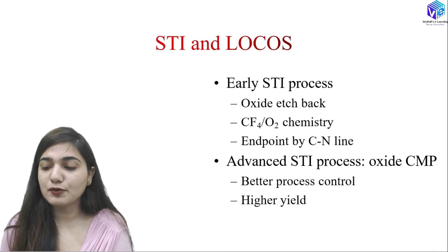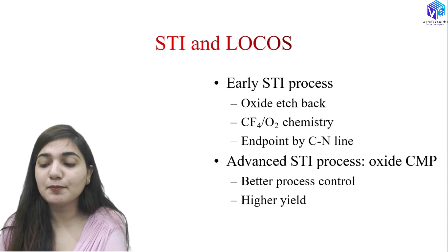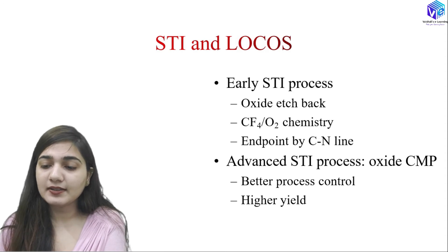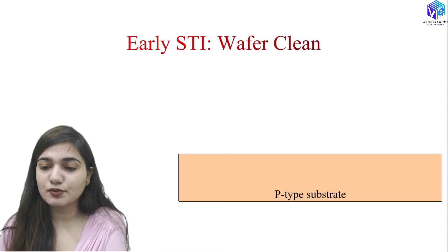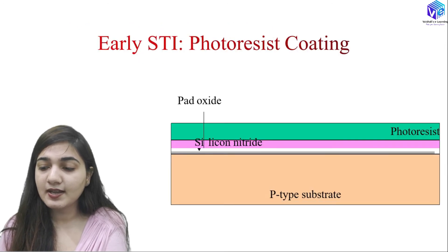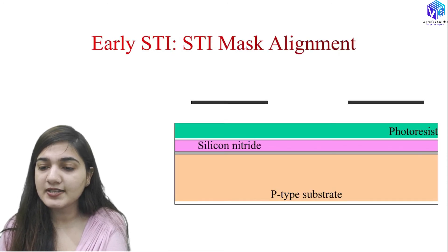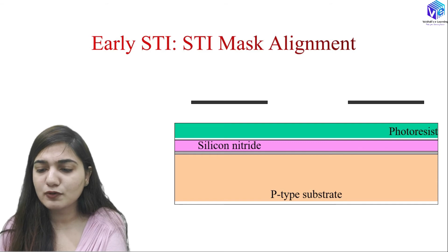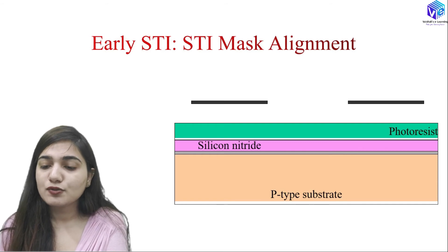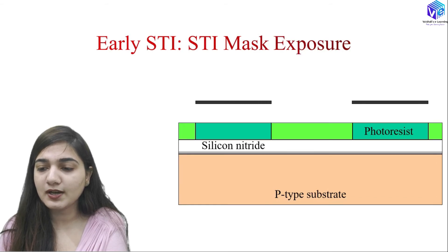Advanced STI processes use oxide CMP (chemical mechanical polishing), providing better process control and higher yield than early STI processes. The STI process steps are: clean the wafer, form the pad oxide layer, silicon nitride layer, then photoresist layer forming the mask. Then STI mask alignment is performed — placing the mask at the desired location — followed by exposure with UV light to change the photoresist characteristics.